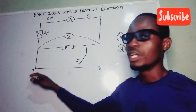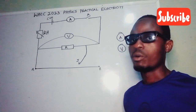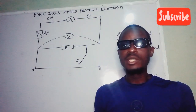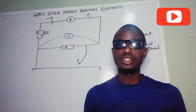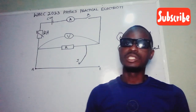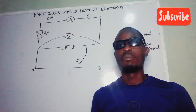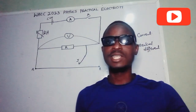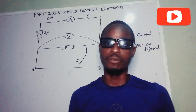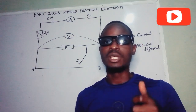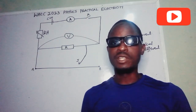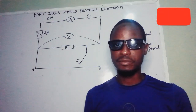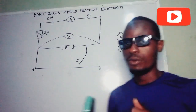We need to understand the concept of current. Current is the effect of movement of a charged body. When a body is charged negatively or positively and is set into motion by a certain force called electromotive force, that body will create an effect, and the effect of this movement is what we regard as electricity. When current flows...